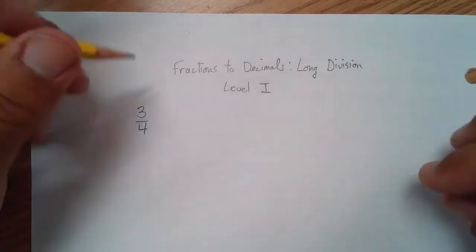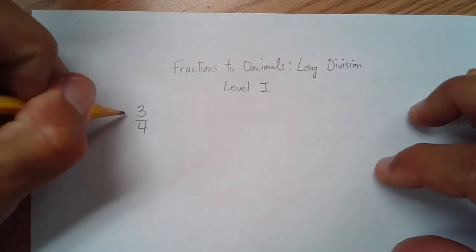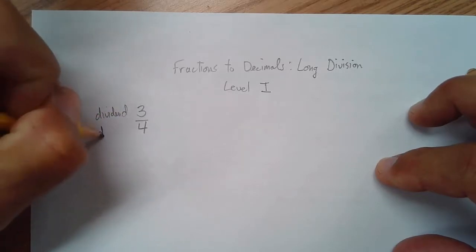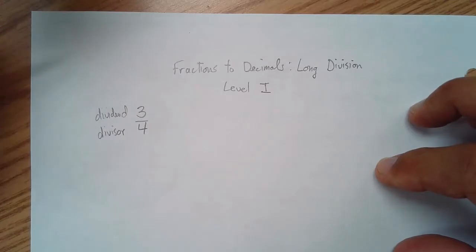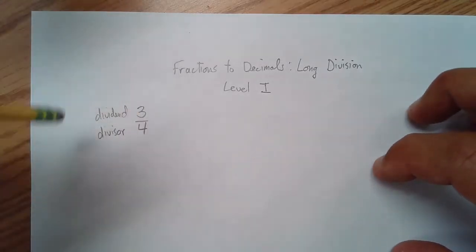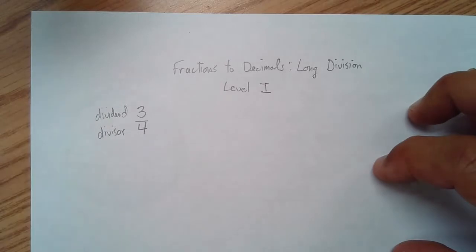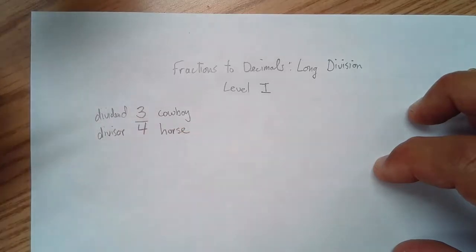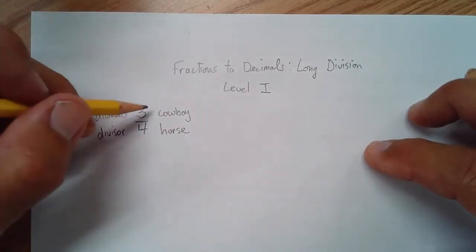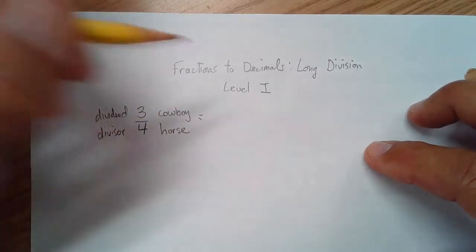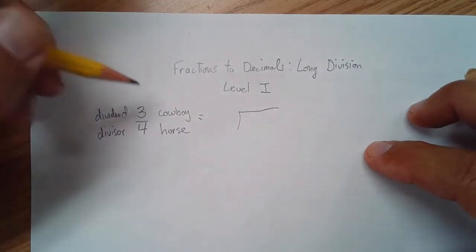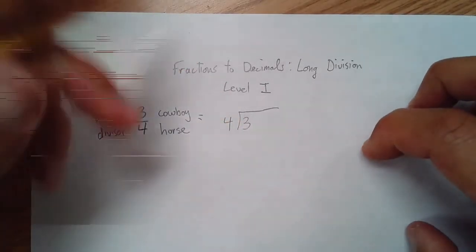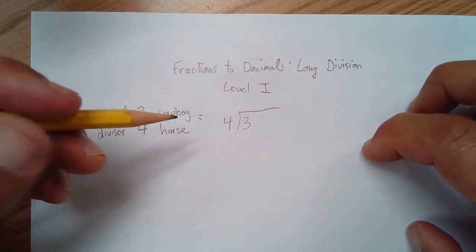In three-fourths, the top number is called the dividend and the other one is called the divisor. Those are the official names, however I look at this as cowboy and horse — not as technical, but it helps me out. The cowboy rides on top of the horse. The cowboy sleeps inside and the horse sleeps outside in long division.